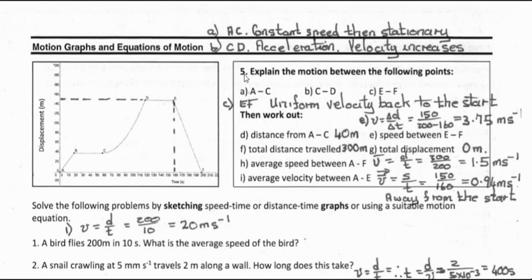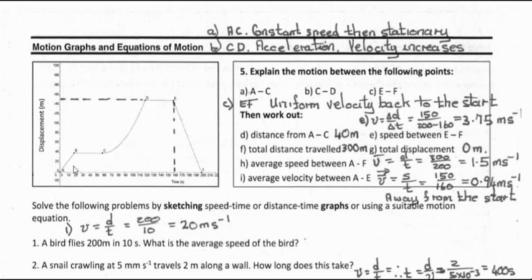The question says: explain the motion between the following points. A to B is uniform velocity. B to C is stationary. C to D is increasing velocity, going towards a somewhat constant velocity nearer to D. D to E is a stationary object. E to F is uniform velocity back to the start — a negative velocity relative to A to B and C to D.